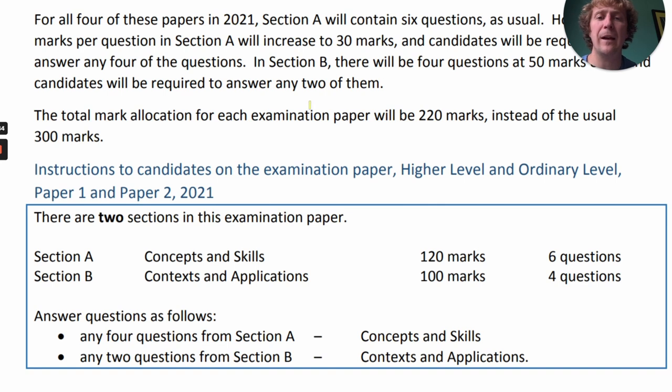This year, the mark allocation will be 220 marks in each paper instead of 300 marks. In Section A, there's 120 marks, and in Section B, there's 100 marks. Section A has 6 questions, while Section B has 4 questions.